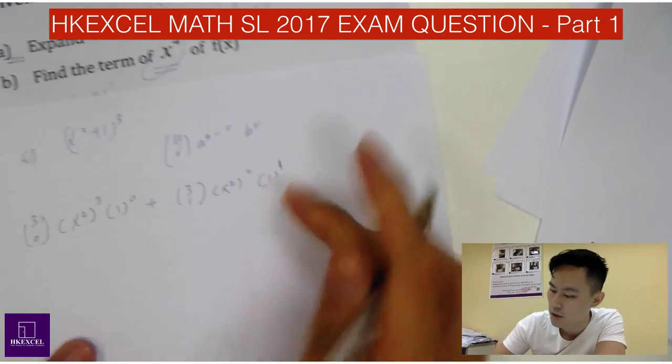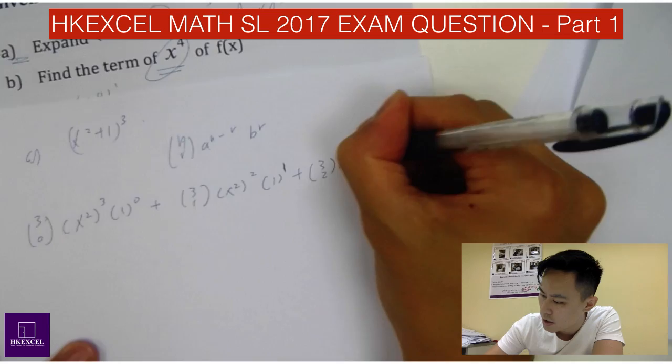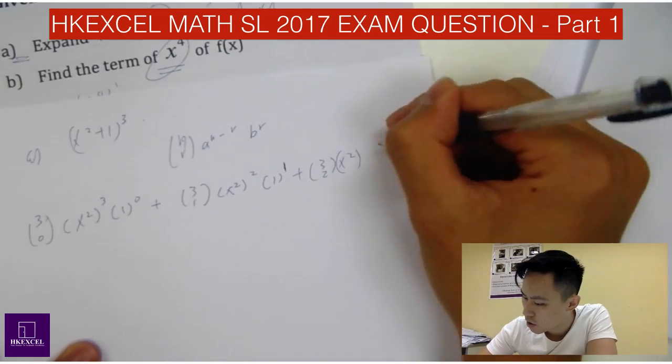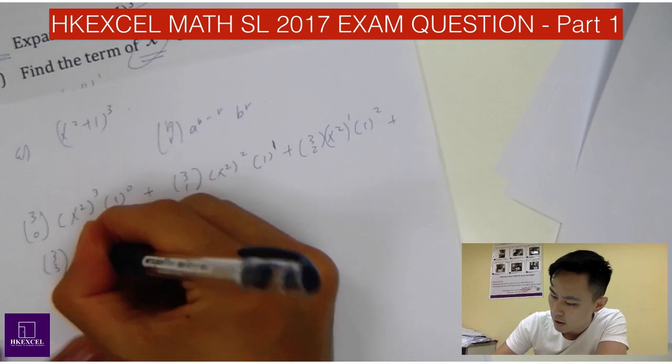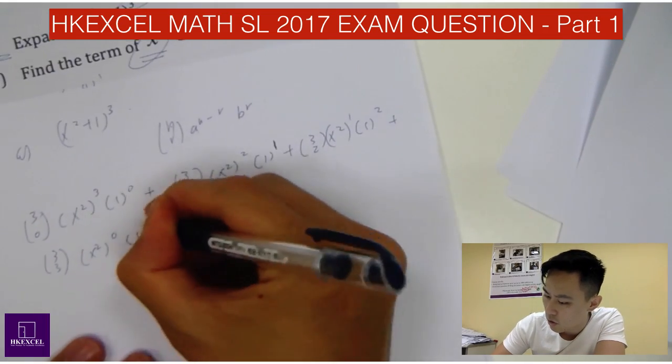It's kind of simple for this one. So then 3C2 (x²) and then 3 minus 2 is 1 and then 1² and then finally it's 3C3 (x²)^0 1³.